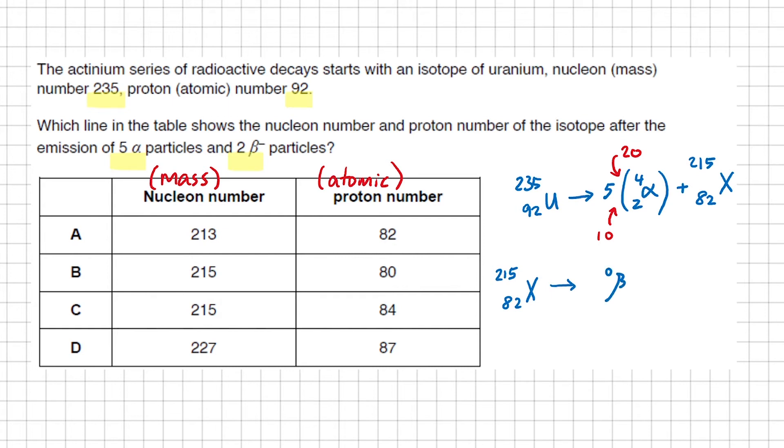This element will now go through two beta decays. The mass number should remain unchanged, but the atomic number should increase by two so that the two sides of the nuclear equation are balanced. So the answer here must be C.